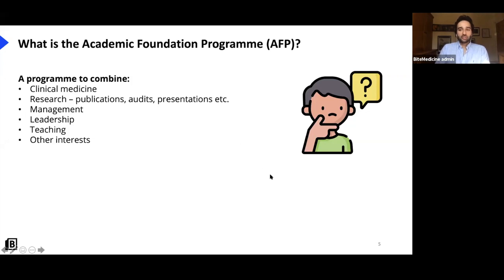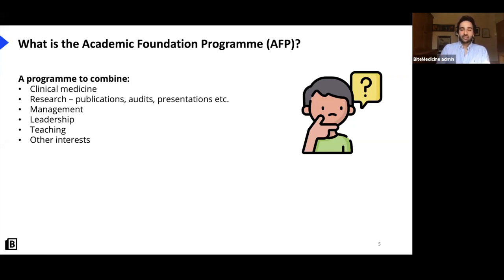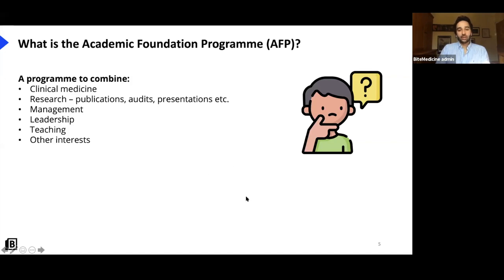The academic foundation program is slightly different. It's designed as a fabulous opportunity for foundation doctors to develop their research skills, management, leadership, teaching, and various other interests. How it normally works is that most places offer a four-month dedicated academic block, normally during F2. Whereas other foundation trainees during F2 would be doing another clinical rotation, you'll be doing an academic rotation in whichever area interests you — and there are loads of varied opportunities available.